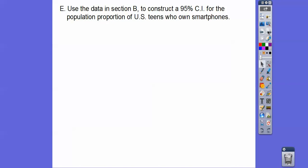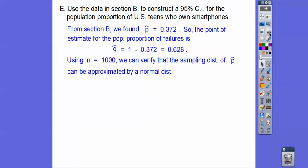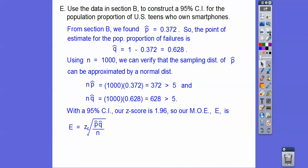Using the teens and smartphones data, we'll construct a 95% confidence interval for the population proportion of teens who own smartphones. From earlier, P-hat is 0.372, so Q-hat is one minus 0.372, which is 0.628. With a sample size of 1,000, we verify that N times P-hat and N times Q-hat are both greater than or equal to five — yes, both conditions are met. For a 95% confidence interval, the Z score is 1.96. Plugging into the margin of error formula gives E approximately equal to 0.030.